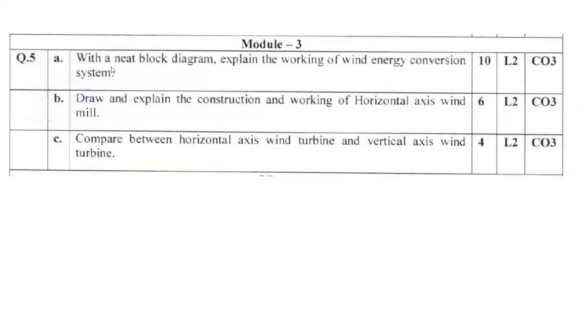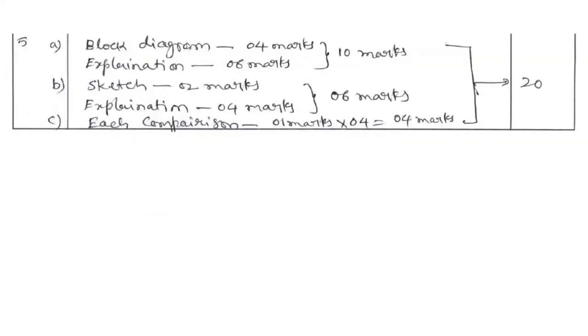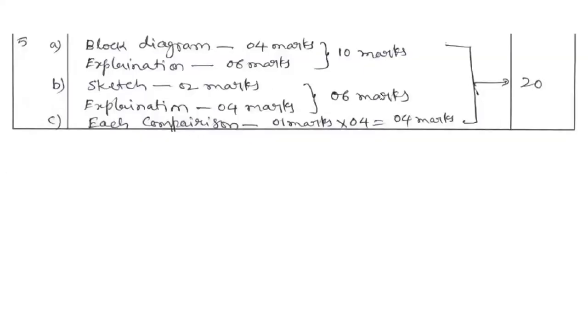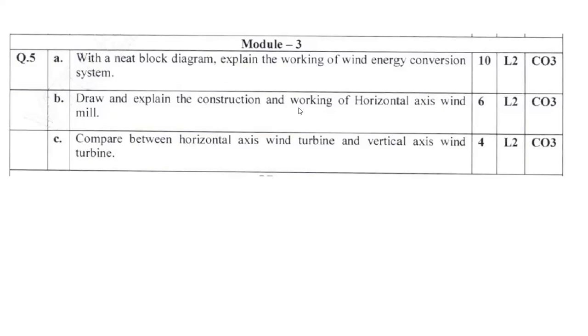Question 5: with block diagram explain working of wind energy conversion system. It starts with wind turbine, then converter, then AC grid or DC grid depending on circumstances. Block diagram carries 4 marks, explanation 6 marks. Draw and explain construction and working of horizontal axis windmill. There are two types: vertical axis and horizontal axis. Sketch 2 marks, explanation 6 marks.